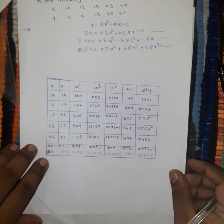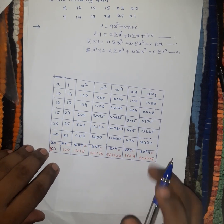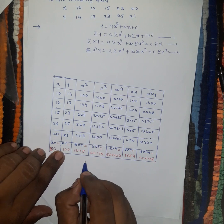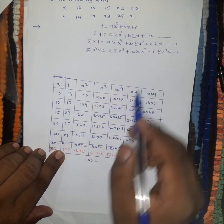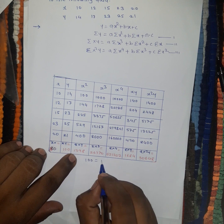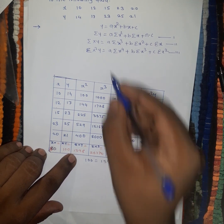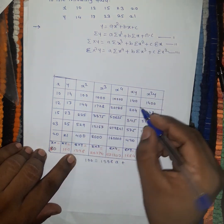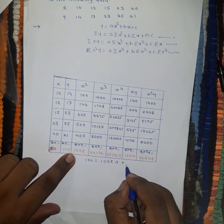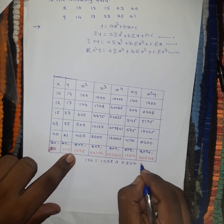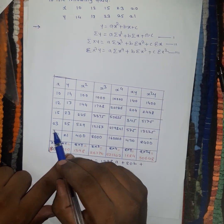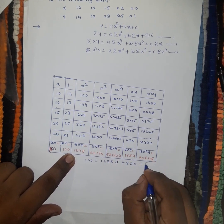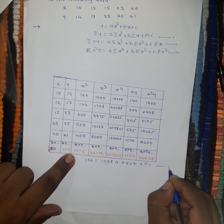The first equation uses summation y, which is 100. So: 100 equals a times summation x squared (which is 1398), plus b times summation x (which is 80), plus n times c. Since there are 5 data values, n equals 5, giving 5c. This is equation number one.